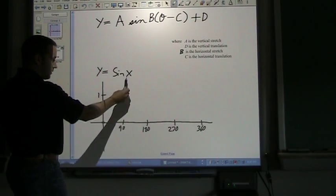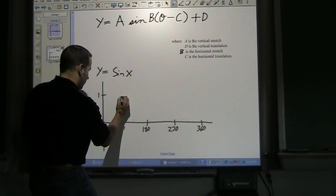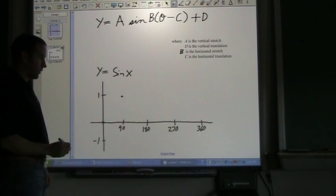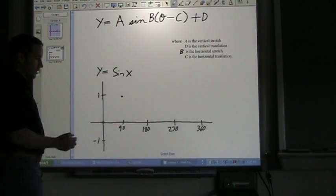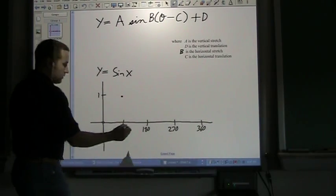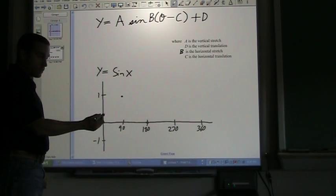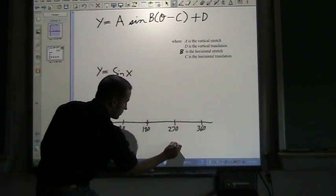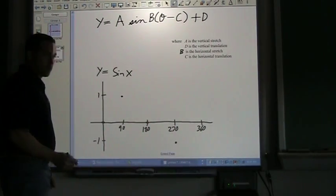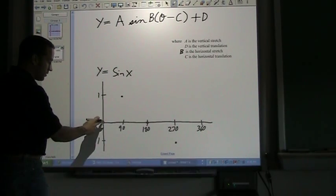Next we'll go to 90—you can type this into your calculator and verify it. The sine of 90 is one. Put another dot up there. The sine of 180 is zero.